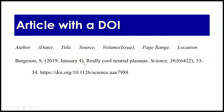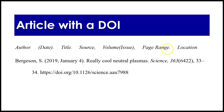Continuing the article citation: comma, volume 363, also italicized, then issue 6422 in parentheses, not italicized — like Fleabag season 363, episode 6422. Then your page range, showing readers exactly where your quote came from: pages 33 through 34. And finally, the location of the source — this DOI.